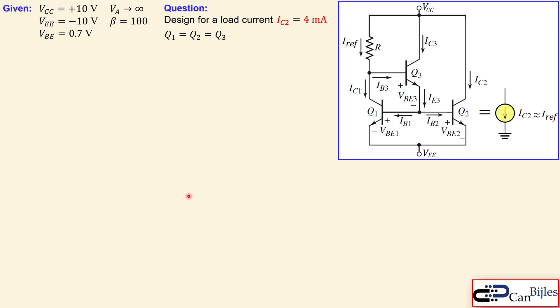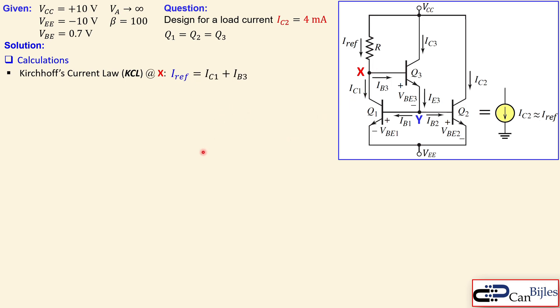In the calculations we start by designating the nodes — node X and node Y. Then we set up Kirchhoff's Current Law at node X: IREF comes in and splits into IC1 and IB3. We call this equation number one. We also set up KCL at node Y: IE3, the emitter current of Q3, splits into IB1 and IB2 — this is equation number two.